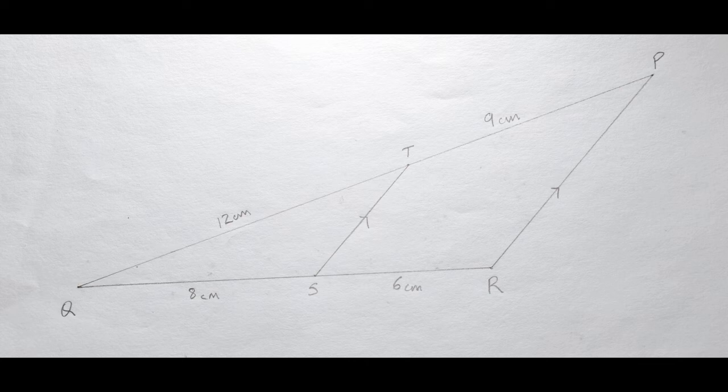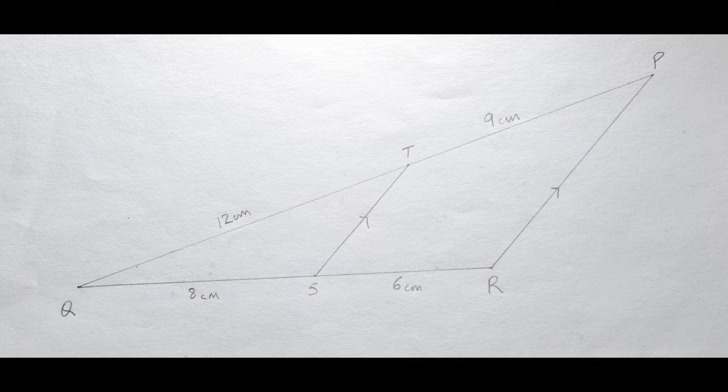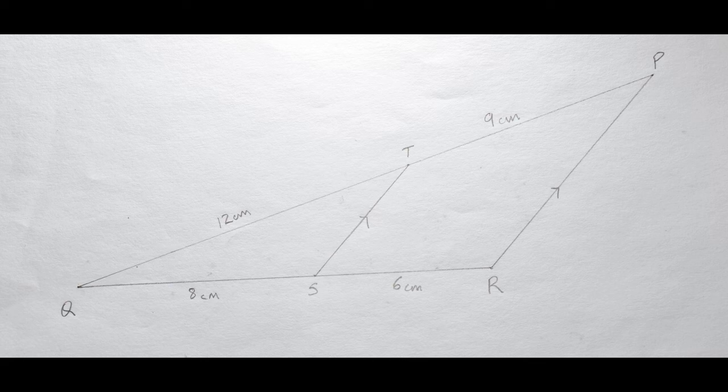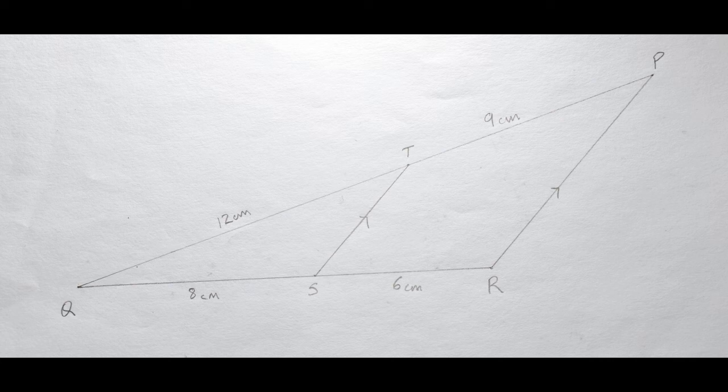and then QT is equal to 12 cm, TP is equal to 9 cm. So in order to verify the basic proportionality theorem, we have to find out whether the ratio QS to SR is equal or not to the ratio of QT to TP. If they are equal, then the basic proportionality theorem statement is true.